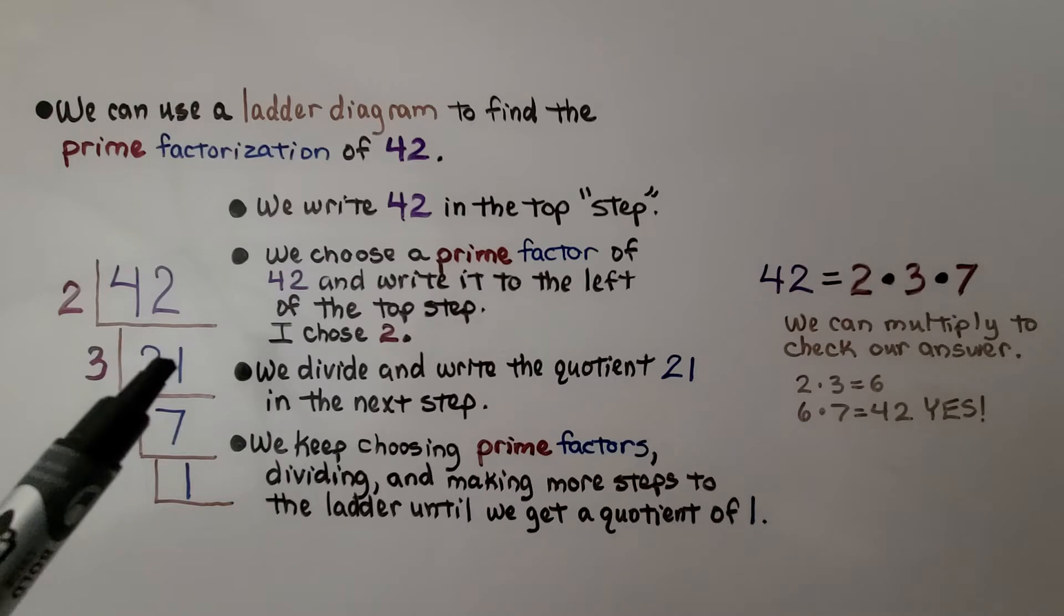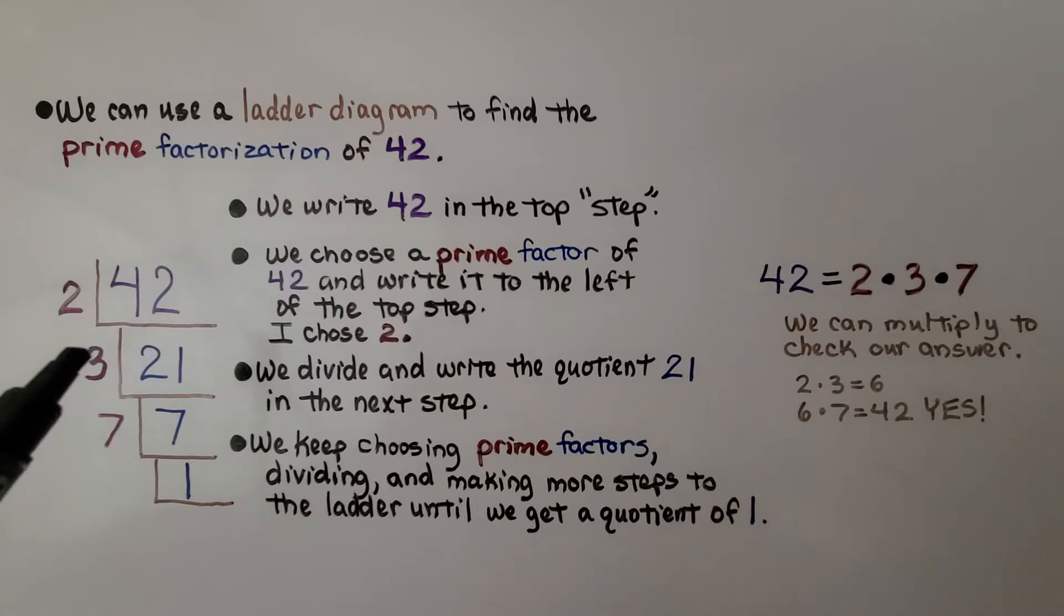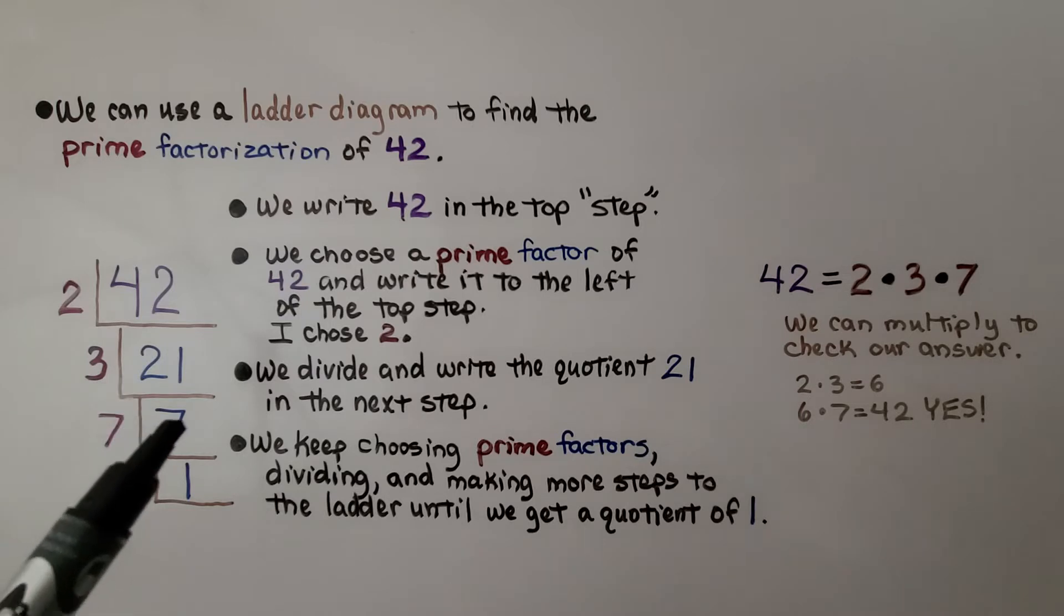We choose another prime factor. What are some factors of 21? 3 times 7. So we write a 3 here as our prime factor. And 21 divided by 3 is 7. We write a 7 here.